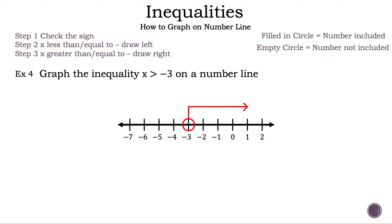Now let's check. Let's write down x greater than negative 3. We need to pick a number to the left of negative 3 and a number to the right of negative 3. First, let's use negative 5. Is negative 5 greater than negative 3? That is not true. Next, let's use the number 0. Is 0 greater than negative 3? That is true. So the arrow is pointed in the correct direction. That is example 4.